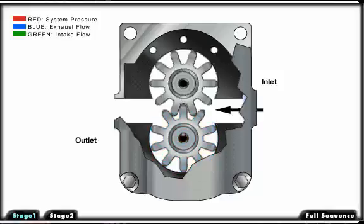As both gears rotate, fluid is drawn in through the inlet. This fluid is trapped between the housing and the rotating teeth of the gears, where it travels around the housing and is pushed through the outlet port.